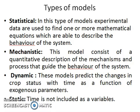Next is the mechanistic model. This model consists of a quantitative description of the mechanisms and processes that govern the behavior of the system. In statistical models, experimental data are converted into mathematical equations, but the mechanisms are not studied. In the mechanistic model, we also quantify the mechanisms or processes that govern the behavior of the system. It explains the relationship of influencing dependent variables as well, and is based on physical selection. In simple terms, mechanistic models describe how and why a particular response result occurred.